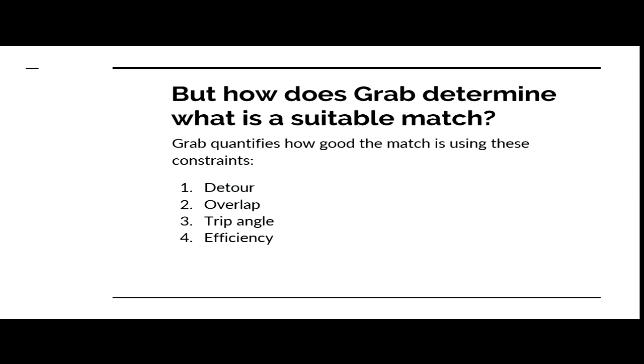The second part of the algorithm talks about the optimization model for GrabShare. Essentially it's split into four parts: detour, overlap, trip angle, and efficiency of the matching.